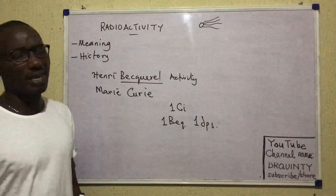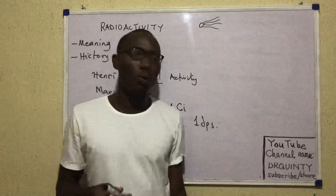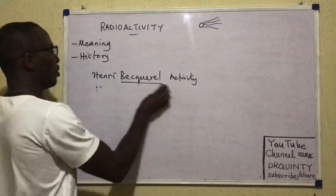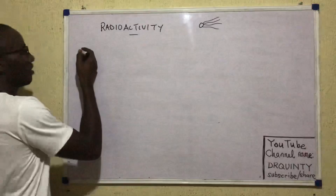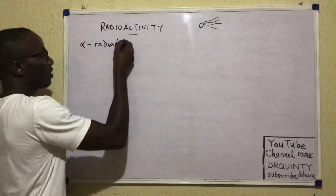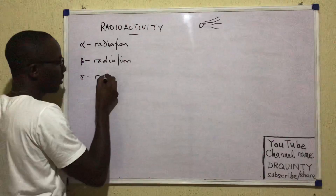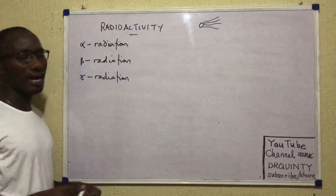We've mentioned radiations — these radiations are of how many types and what are they like? Commonly, we have three main types of radiations. They are given the names: alpha radiations (alpha being like the letter A in Greek), beta radiations, and gamma radiations.